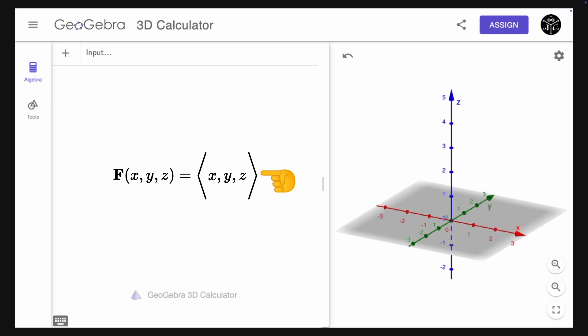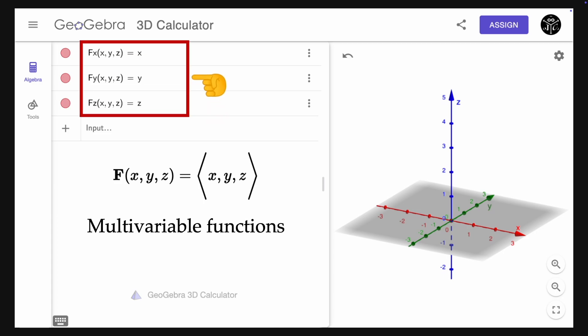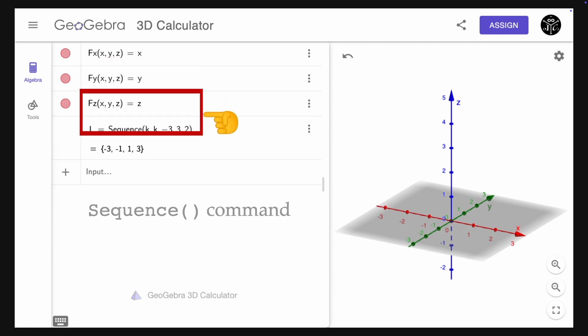Let's plot the simplest 3D vector field F equal to X, Y, and Z. In the input, we type the components of the field X, Y, and Z. Each one of these expressions are multivariable functions.